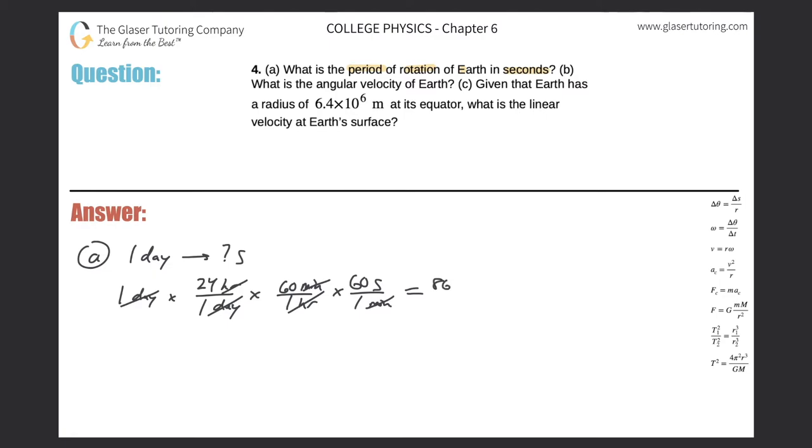So 24 times 60 times 60 is 86,400. So we've got 86,400 seconds. This is the period. That is the answer to letter A. Now it says for letter B, what is the angular velocity of the Earth?